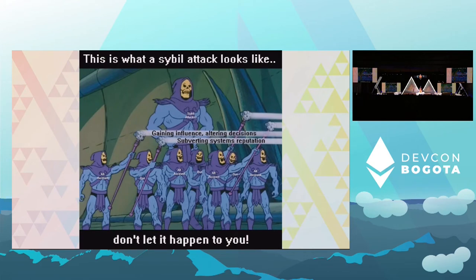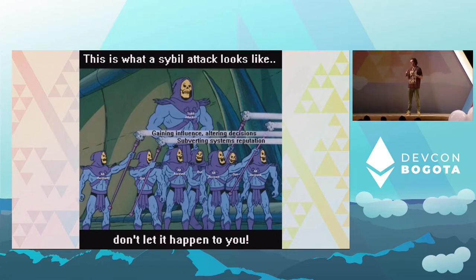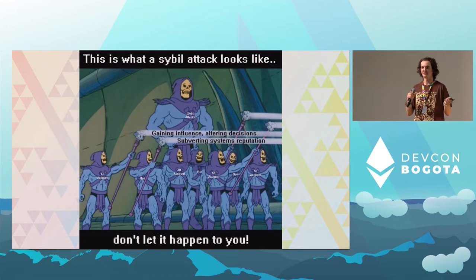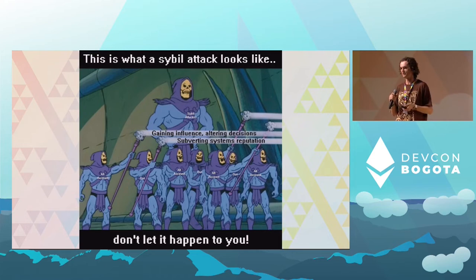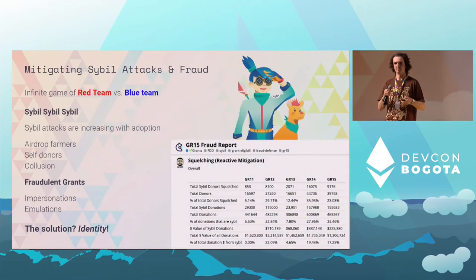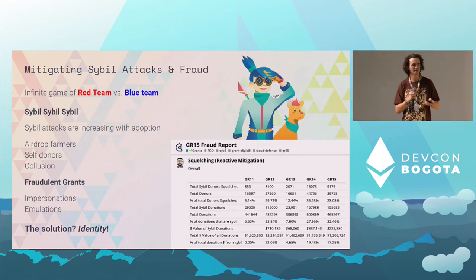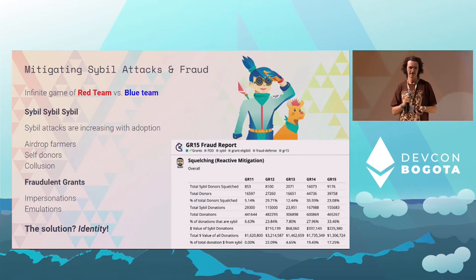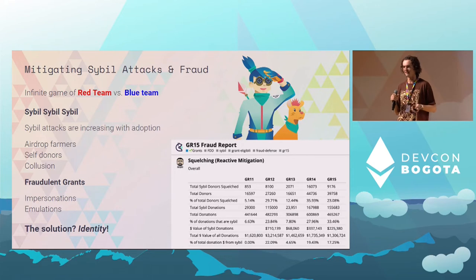Sybil attacks are the single greatest threat to quadratic funding. A sybil attack is basically one human making many accounts — with QF, you could donate to yourself from 100 different accounts, totally skewing the mechanism and stealing funds. It's a constant battle between mitigating sybil attacks while respecting personal privacy and identity systems — a red team versus blue team game that's constantly evolving. Sybil attacks have really increased of late; whether it's bigger matching pools or the bear market, people are running out of ways to make money.